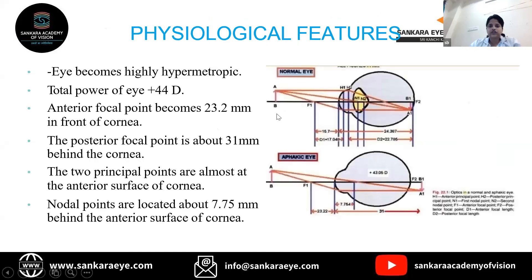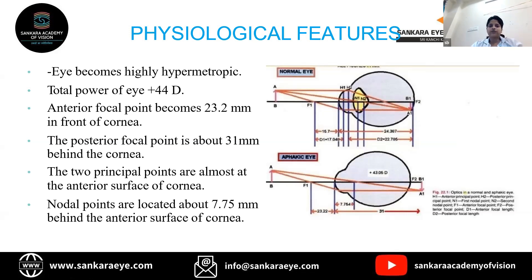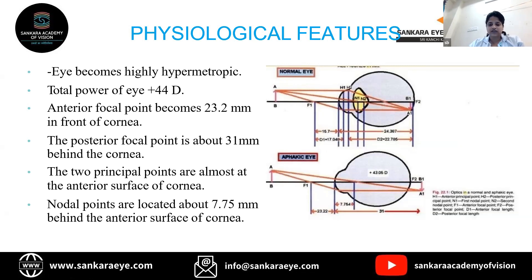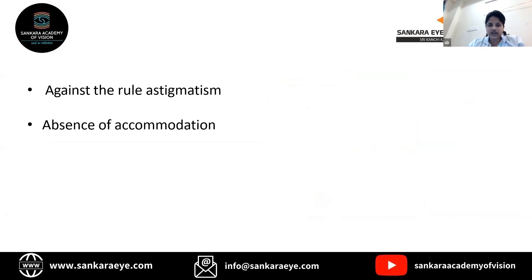In physiological features, the eye becomes highly hypermetropic. Total power of the eye reduces to plus 44 diopters. The anterior focal point becomes 23.2 mm in front of the cornea. The posterior focal point is about 31 mm behind the cornea. The two principal points are almost at the anterior surface of the cornea, and nodal points are located about 7.75 mm behind the anterior surface of the cornea.